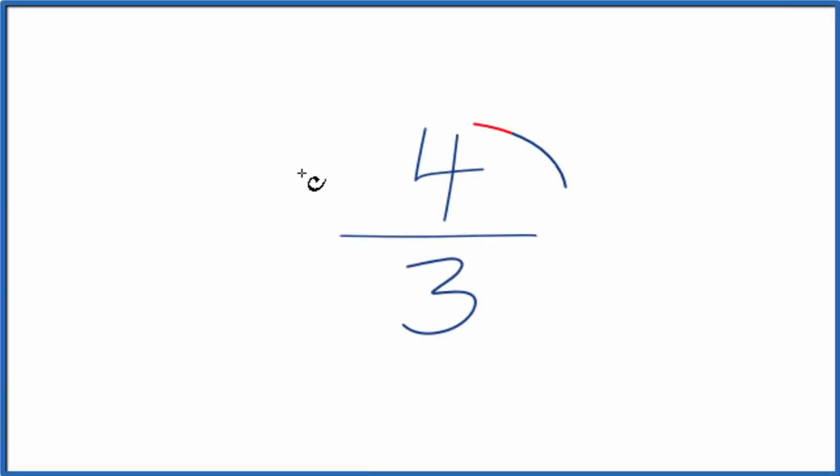Let's simplify the fraction 4 thirds. So to do that, what we want to do, we want to find another fraction that's equivalent. It's equal to 4 over 3, just that we've reduced it down to its simplest terms.